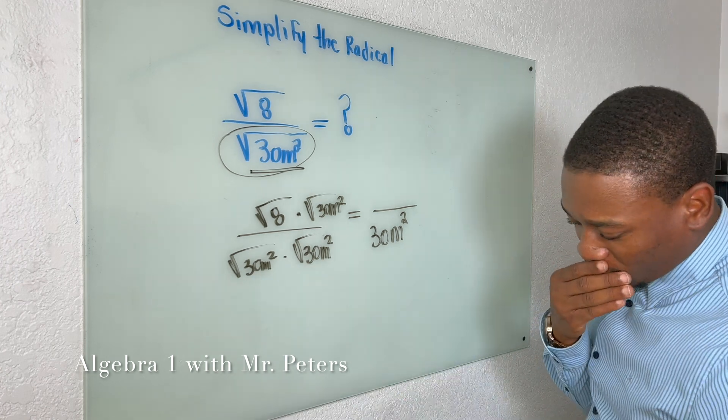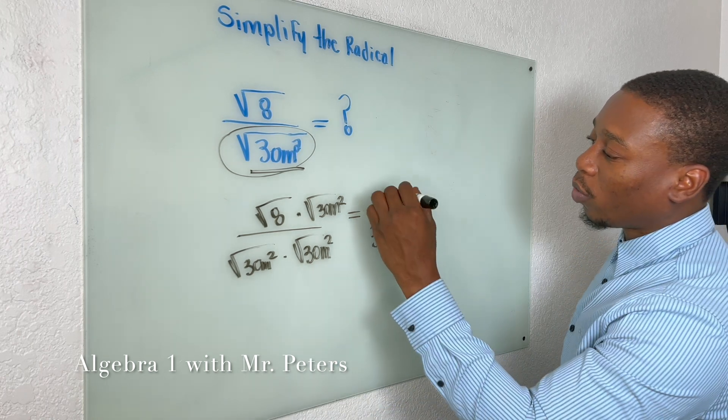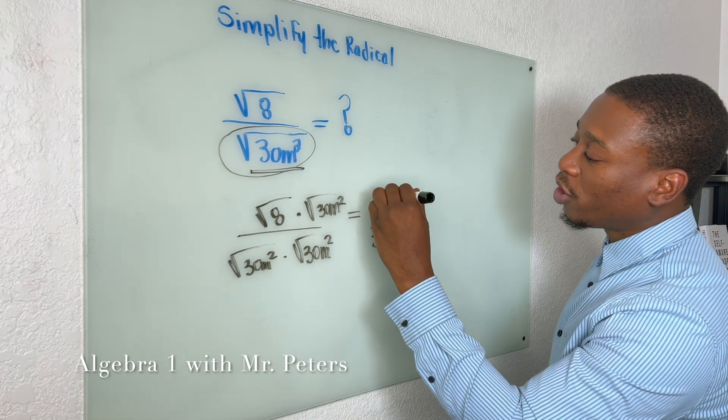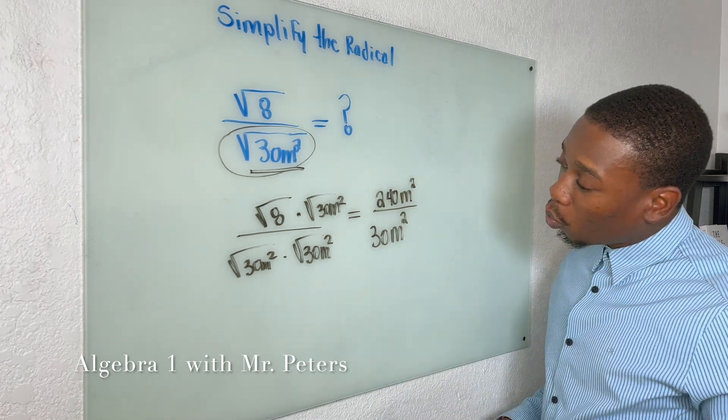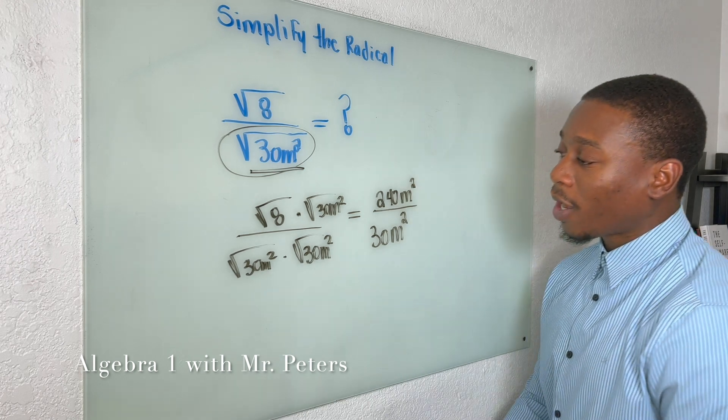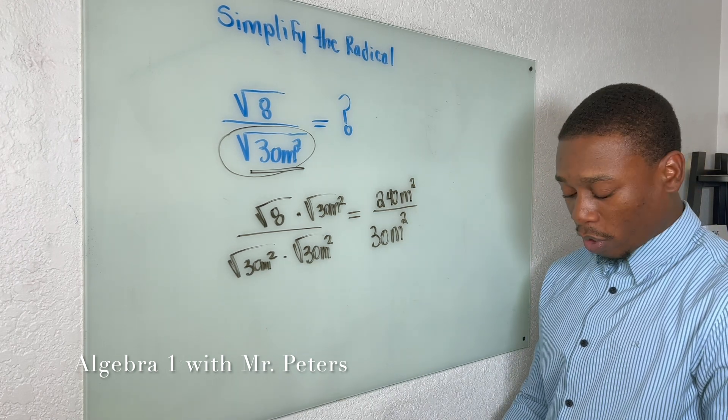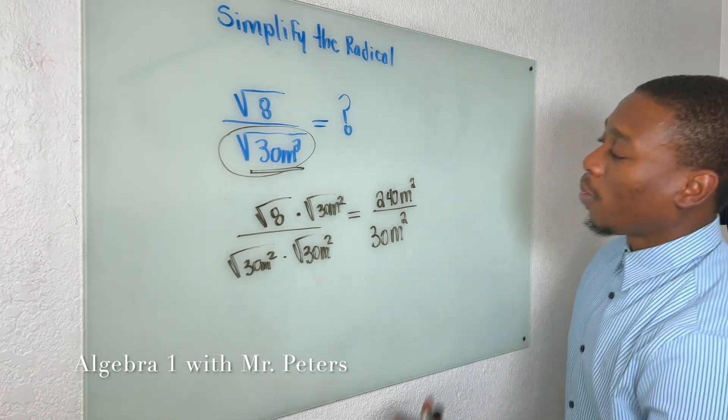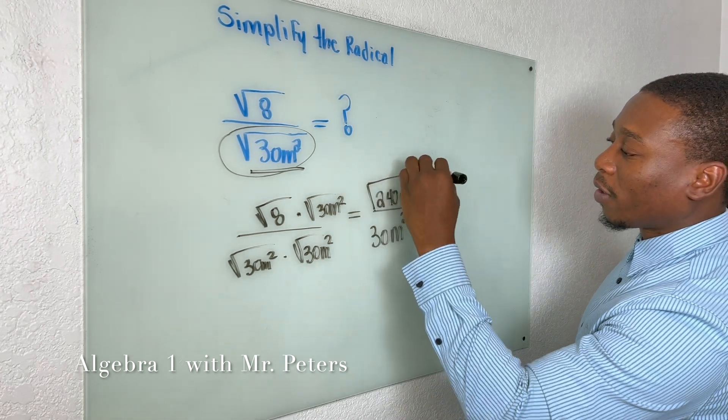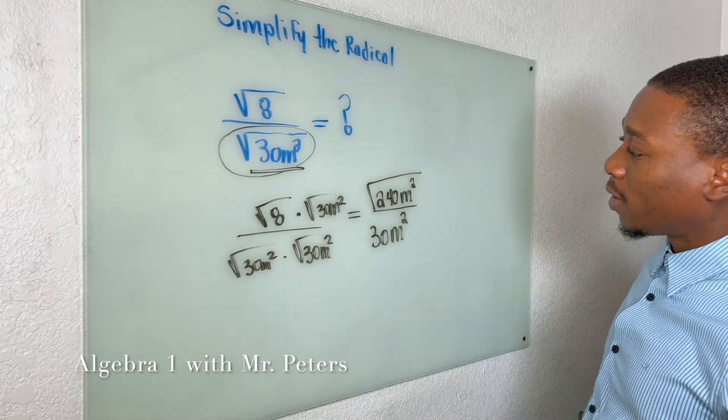And then we're going to go ahead to the top and do the same exact thing. So as a result, on the bottom, we're just going to get 30m² right? Because once you multiply the same radical by itself, it's the same term without the radical. Oh I'm so sorry guys. Then we go back up to the top, and once we multiply, we're going to get √240m². And what's going to be interesting is we're going to try to divide 240, and I think the largest perfect square that goes into 240 is 16.